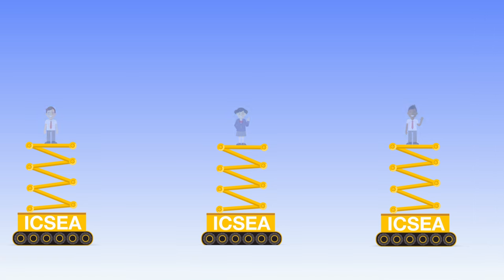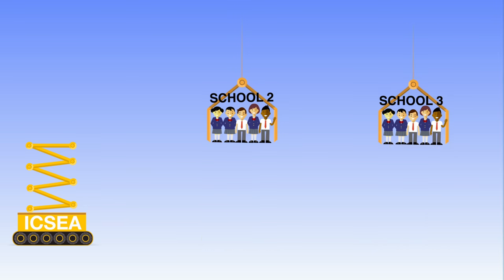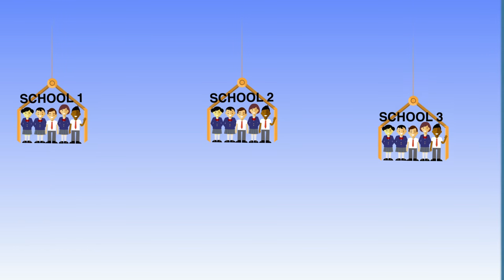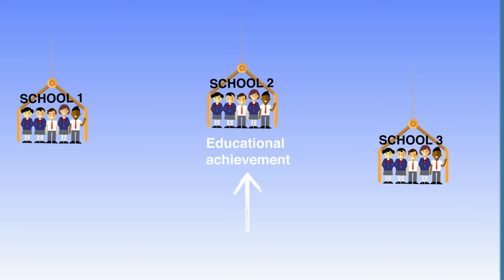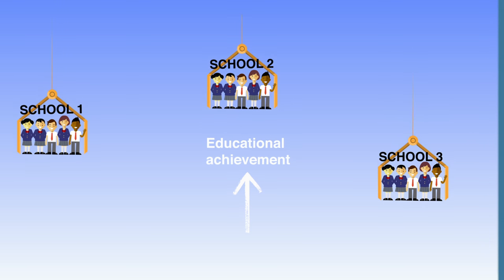Having a strong and valid measure of socio-educational advantage enables us to identify schools with which fair comparison of students' literacy and numeracy levels can be made. These comparisons reveal marked differences in students' level of literacy and numeracy among schools working with students from similar levels of socio-educational advantage.